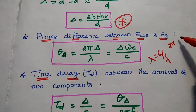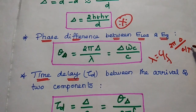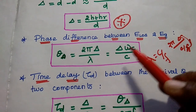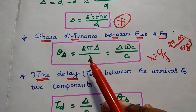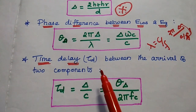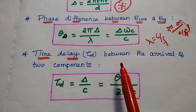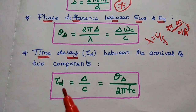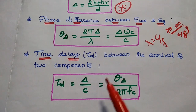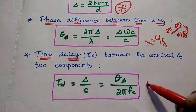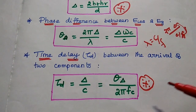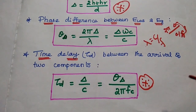The phase difference between the line-of-sight and ground reflected field is theta_delta = 2*pi*delta / lambda. Replacing lambda with c/f, this becomes theta_delta = delta * omega_c / c. The time delay between the arrival of the two components at the receiver is tau_d = delta/c, which can also be represented as theta_delta / (2*pi*fc). These three formulas give the path difference, phase difference, and time delay between the direct and ground reflected paths.